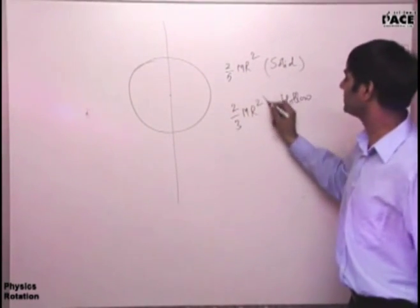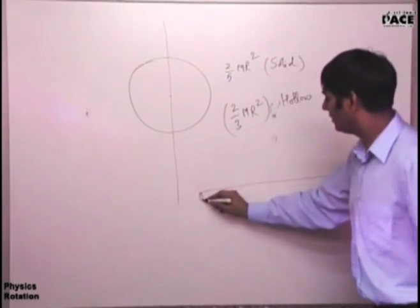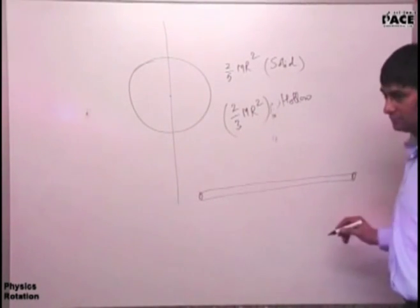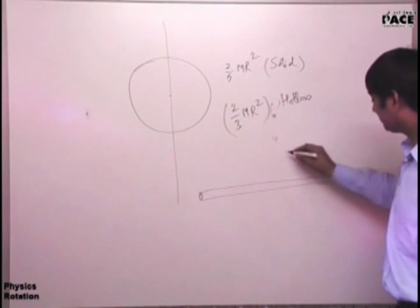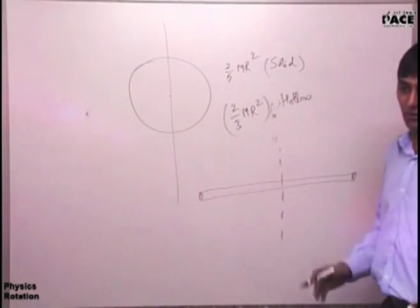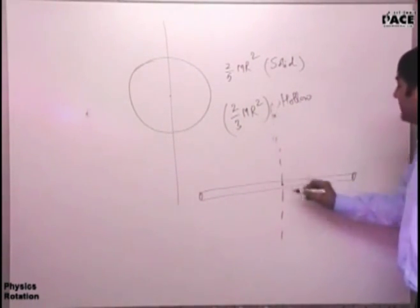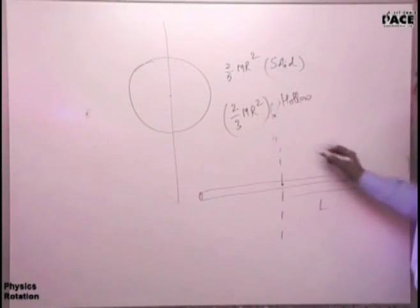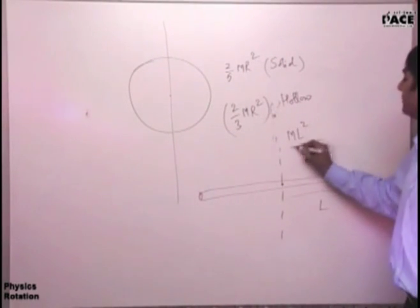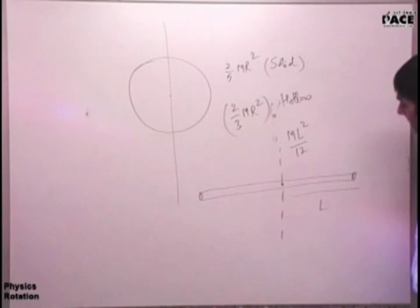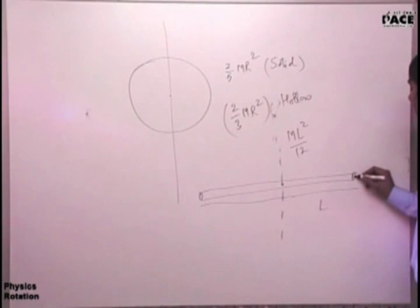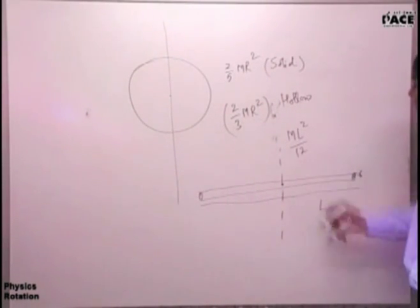And a rod - thin rod. ml squared by 12 if you take it from the center, and ml squared by 3 if you take it from the end. So rod is of length l. If it is a thin rod, then it's ml squared by 12. And length will be full length. Otherwise, if it's radius of cross-section, then what will the moment of inertia be?